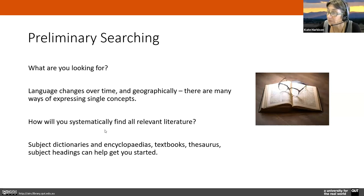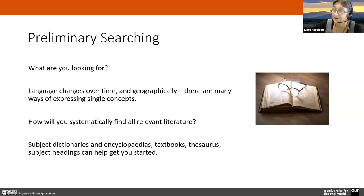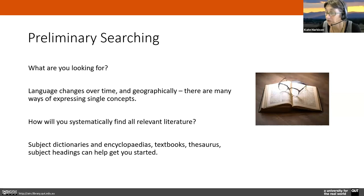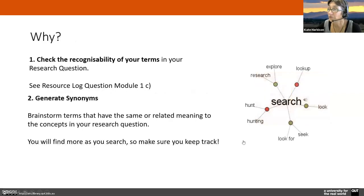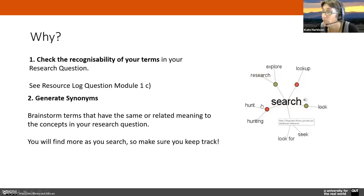How will you systematically find all the relevant information? I really find that doing a spreadsheet or a table so I know that I've ticked off searching in different places is a really good help, because otherwise I don't know where I've been and I end up repeating myself again and again. You can use dictionaries and textbooks to get you started — it's a good idea to look for different terminology and to generate synonyms. One of your research log questions, 1C, is actually about what different synonyms you are likely to have.